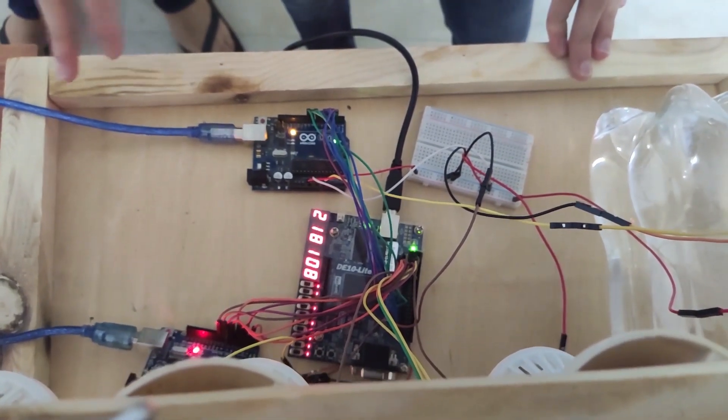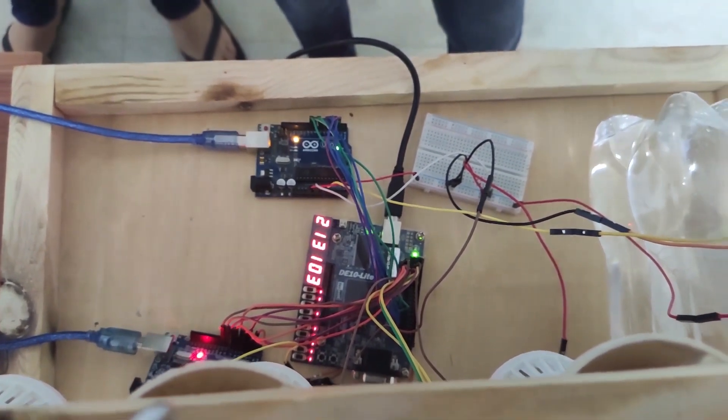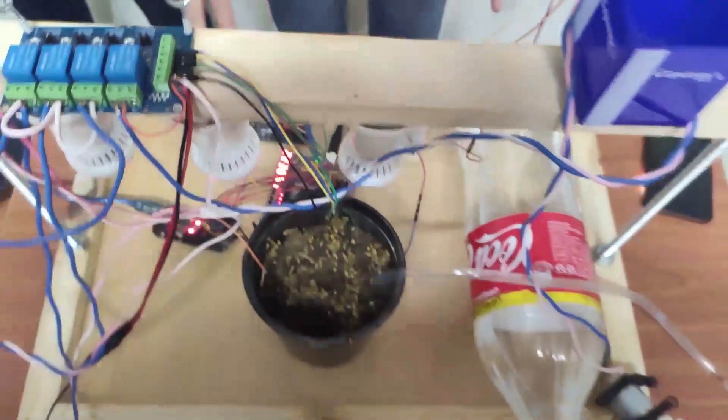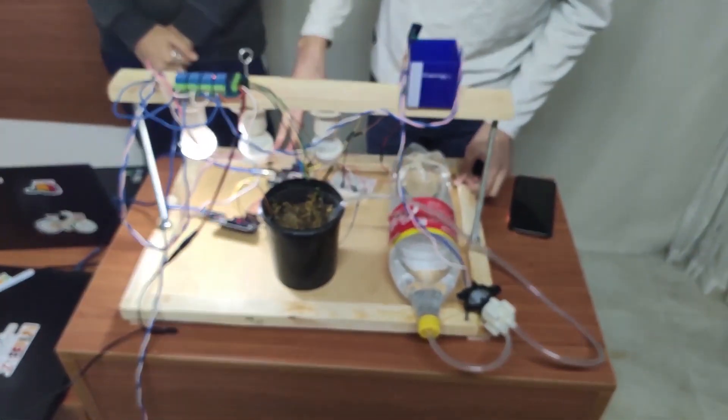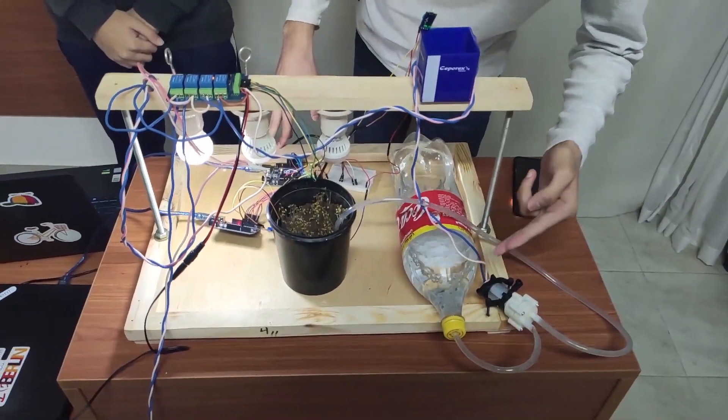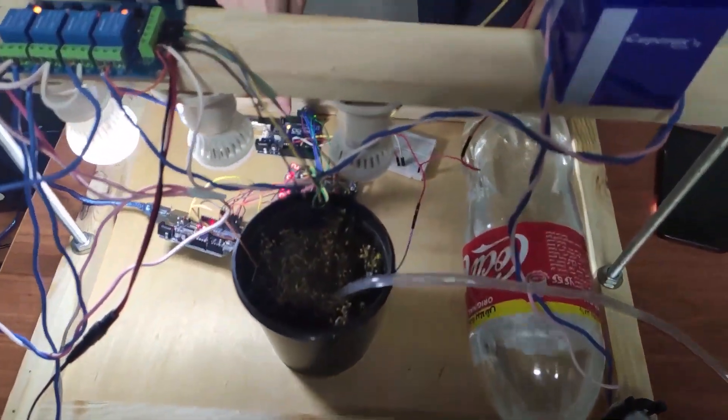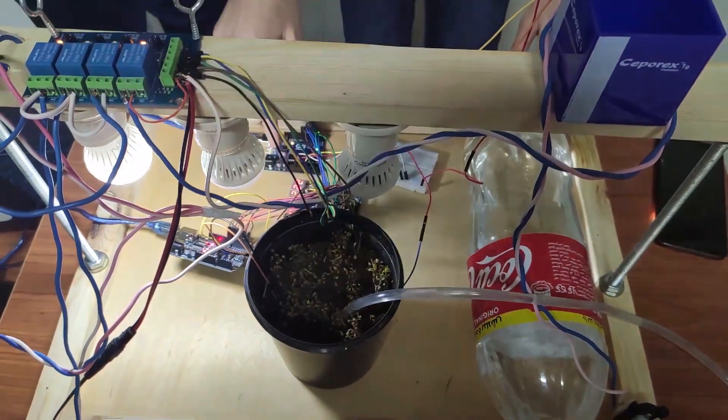As soon as we turn on everything, the relay will work and the pump will work. So as you can see now, the pump is working and we have only one lamp working. That's because of the light intensity of the whole room.